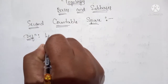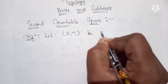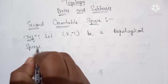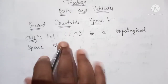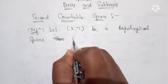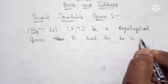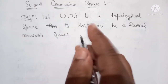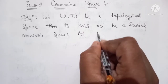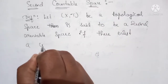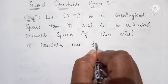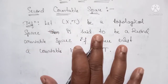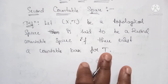Let (X, T) be a topological space. Then it is said to be a second countable space if there exists a countable base for T. Suppose there exists a countable base for T, then we can say that this topological space X is a second countable space.